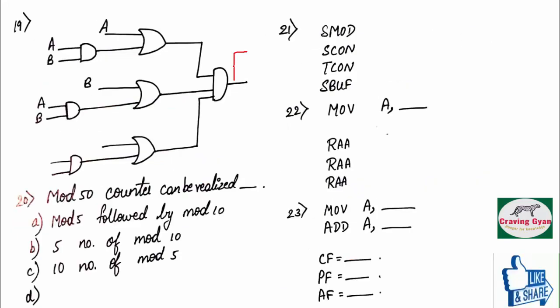Nineteenth question. For the given combinational circuit, you have to find the expression for F.